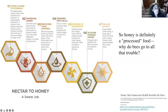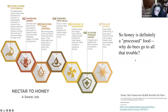So honey is a processed food, involving many steps: flower to stomach, invertase added, receivers take control, dropped into cells, fanned to evaporate, glucose oxidase added, and sealed in wax. But why do bees go to all that trouble? In part, because honey has tremendous health benefits for bees.